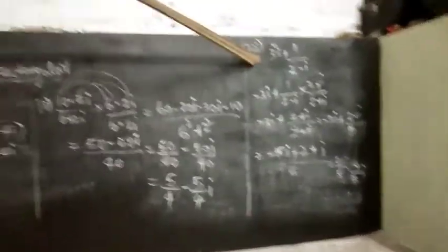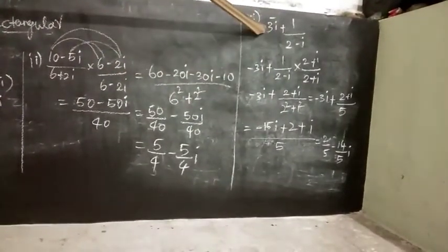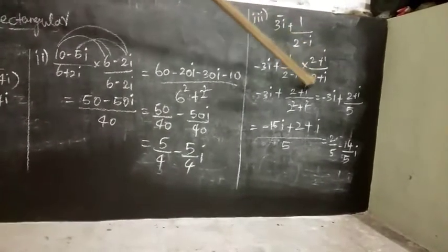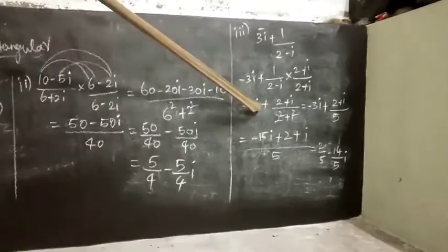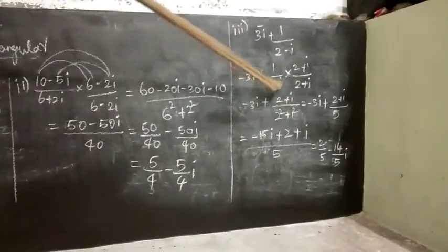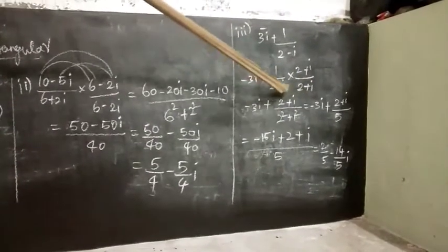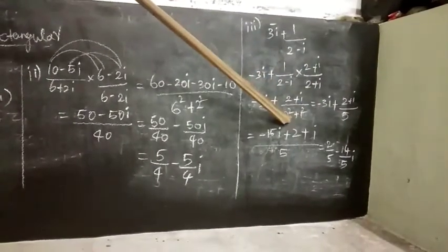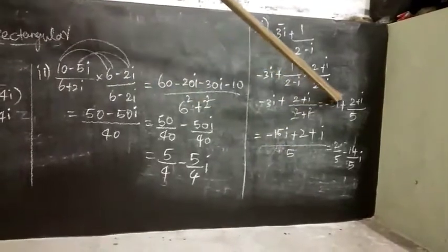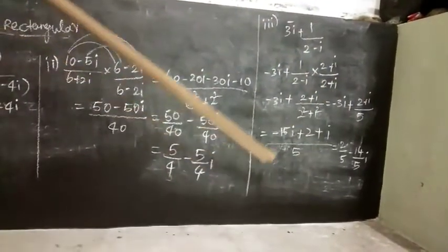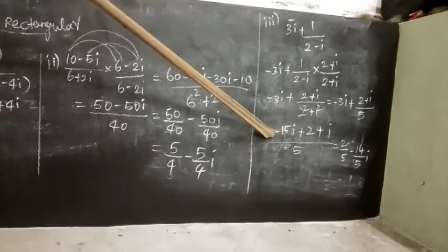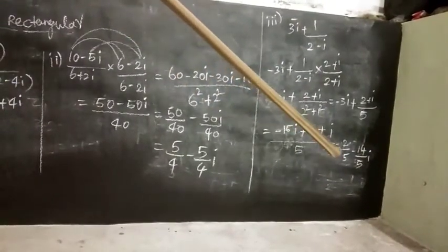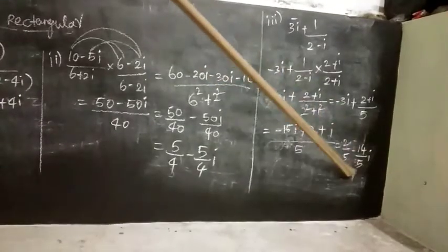Third problem: 3i bar plus 1 divided by (2 - i). Taking conjugate of 3i gives minus 3i. Taking conjugate of (2 - i) gives (2 + i). Multiply 1/(2 - i) by (2 + i)/(2 + i). Numerator is 2 plus i. Denominator is 2 squared plus 1 squared equals 5. So the expression becomes minus 3i plus (2 + i)/5. Taking LCM, result is 2/5 plus (1 - 15i)/5, giving 2/5 minus 14/5 i.